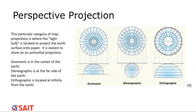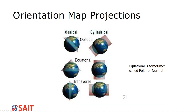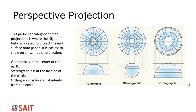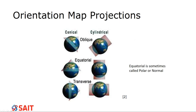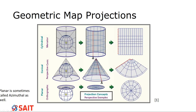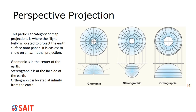To bring it all together: a cylindrical equatorial tangent gnomonic projection means the light is at the center, it's touching along one line, oriented upright like a can, and it's a cylinder. These descriptors combine to fully describe how a map is set up. We'll be moving on to objective 7-2 in the next video.